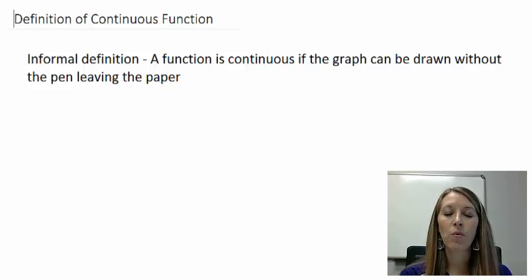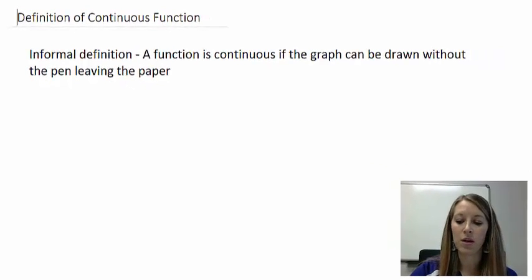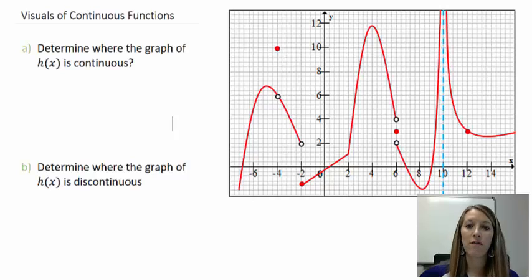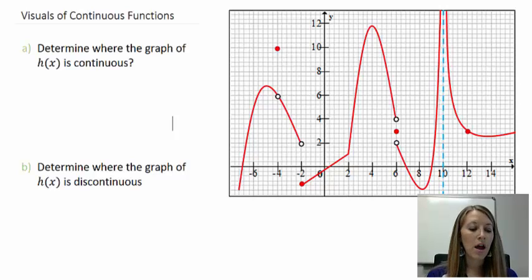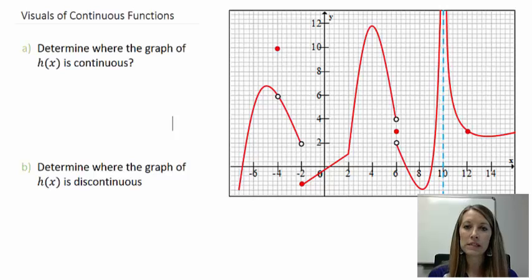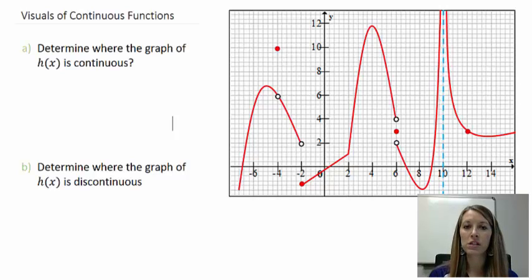As I started the rest of the sections with visuals, let me do the exact same thing here. I'm going to give you the visual that we've been working through in our limits videos. We see this function, and in Part A we want to know where our function is continuous, and in Part B we want to know where our function is discontinuous. It's actually going to be easier to do Part B first, and then we'll fill in the rest with Part A.